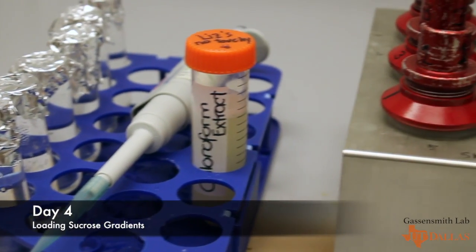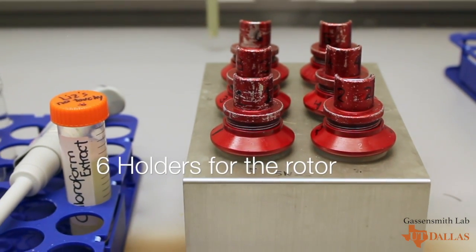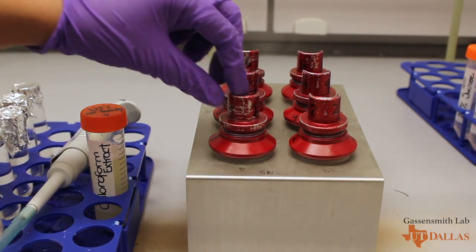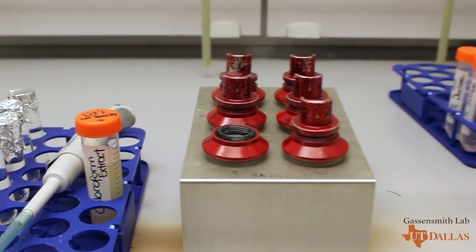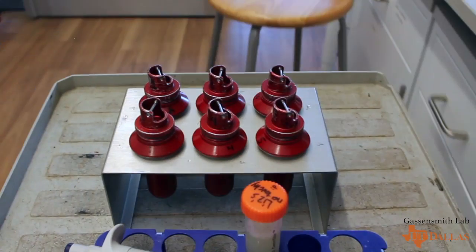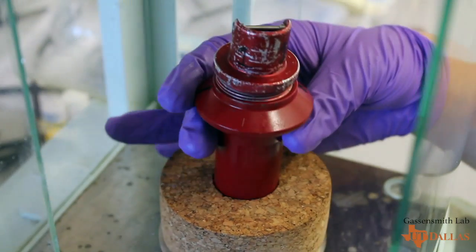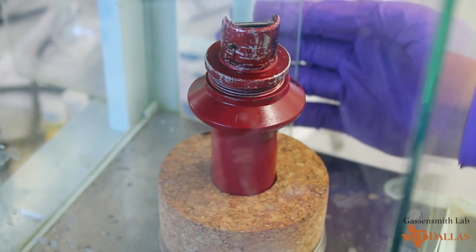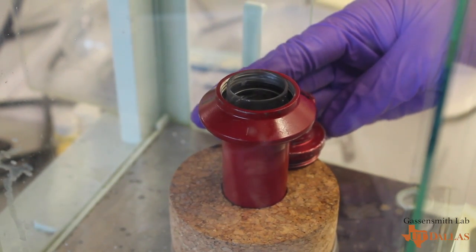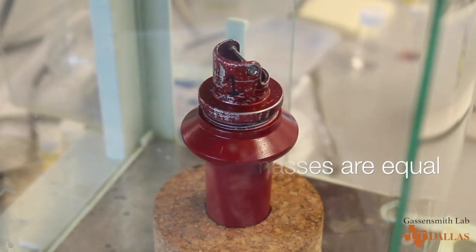For this next step, you'll need your chloroform extract, 6 high-speed centrifuge tubes, your thawed sucrose gradient, and appropriate pipettes. Carefully place each sucrose gradient into the tubes. Slowly add approximately 2 milliliters of your extract to the tops of each gradient while in the tube. Make sure not to drop all the extract in the same location and make sure the centrifuge tubes are equal in mass.